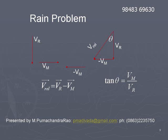In the form of vectors, we can write v relative equals vr minus vm. This is the mathematical form of relative velocity. Remember that v relative, vr, and vm are all vectors.